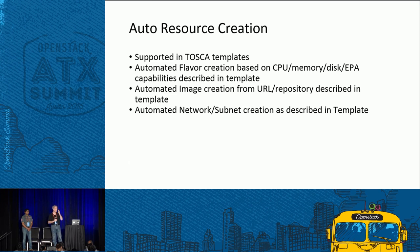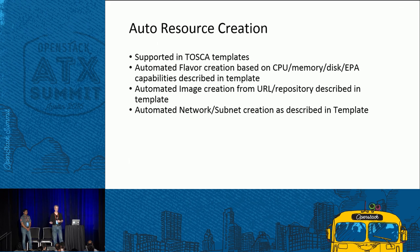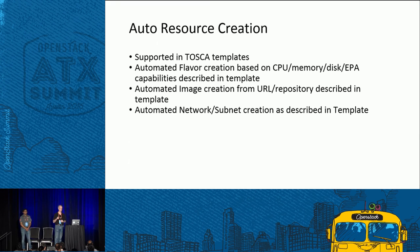Auto resource creation was another feature made possible by using TOSCA parser and Heat Translator. For specific resources, you can specify them in the TOSCA template, and if they don't exist already, the translation to Heat will create those resources in the Heat template — just like you can do with a normal Heat template today. This includes flavor creation, image creation, and network and subnet creation, all mapped out of TOSCA.